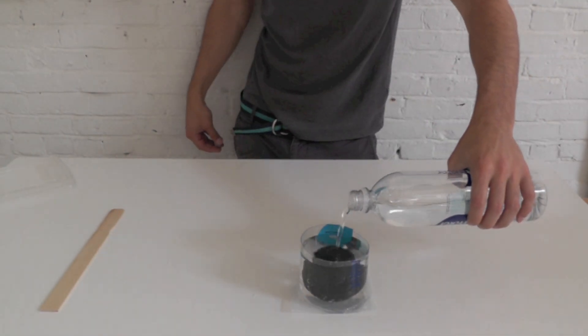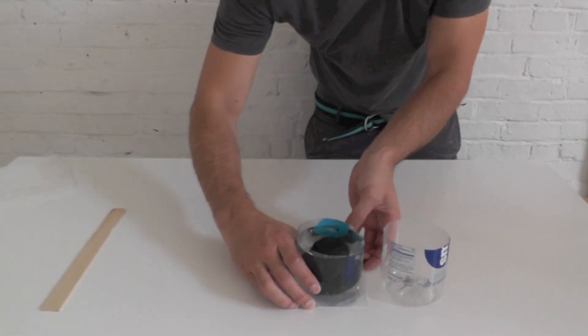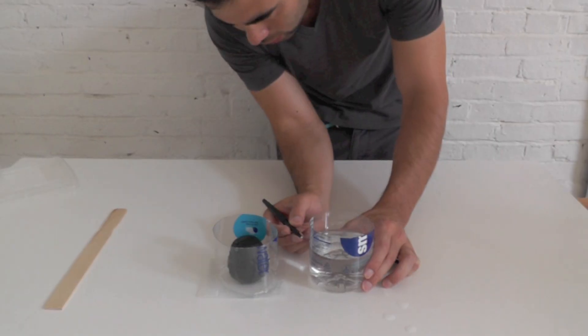I pour water into the mold, not only to make sure that it's watertight, but to also use it to measure how much of the silicone I need to use.